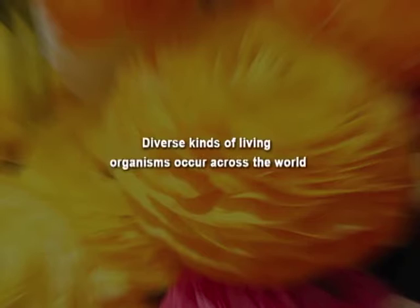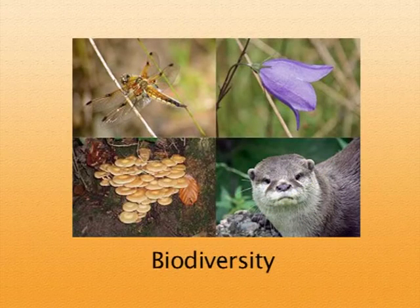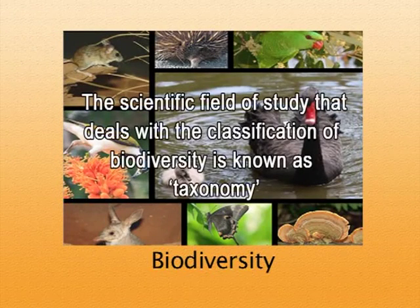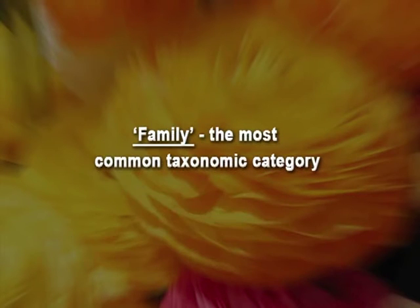As we all know, in this world diverse kinds of living organisms occur. Since the last two to three centuries, scientists have tried to arrange this huge diversity of life under some formal classification systems. The scientific field of study that deals with the classification of biodiversity is known as taxonomy. Historically, plant taxonomists have classified the diverse kinds of plants under different taxonomic categories, the most common being the family.